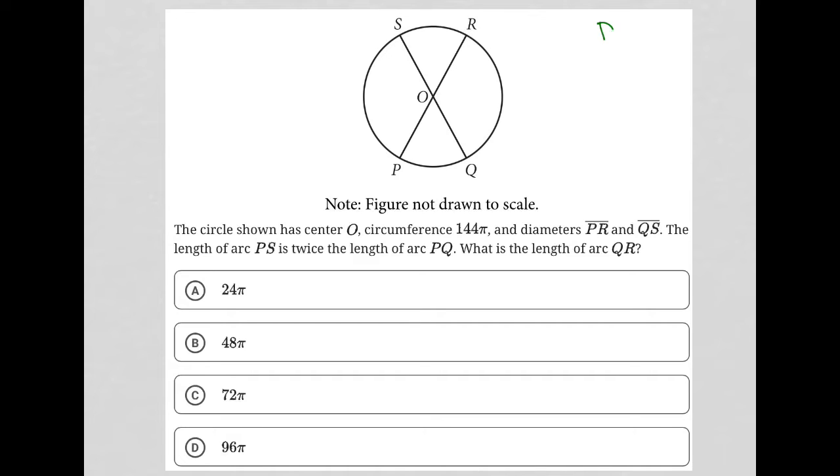So this question is a diagram question. We have the circle drawn here. We have a center of O. We have S and R and P and Q. The question says the circle shown has center O, circumference 144π. Alright, so let's start with that.